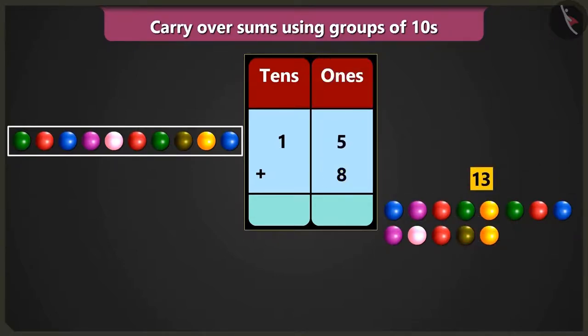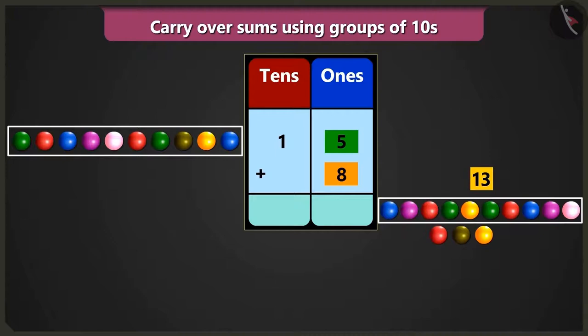Hey, but how will we write 13 in the box of ones? Bubbly, look, here out of 5 ones and 8 ones, we can make a group of 10. Because the numbers add up to 13, that is 1 tens and 3 ones.